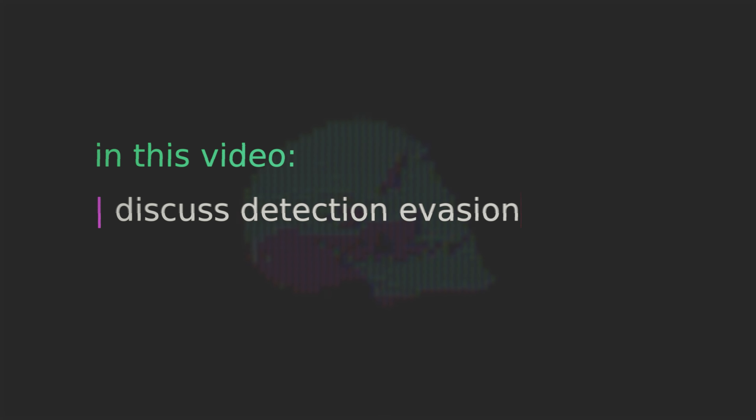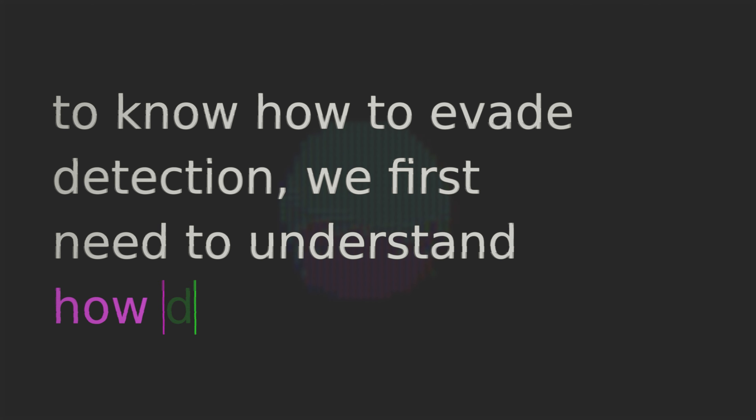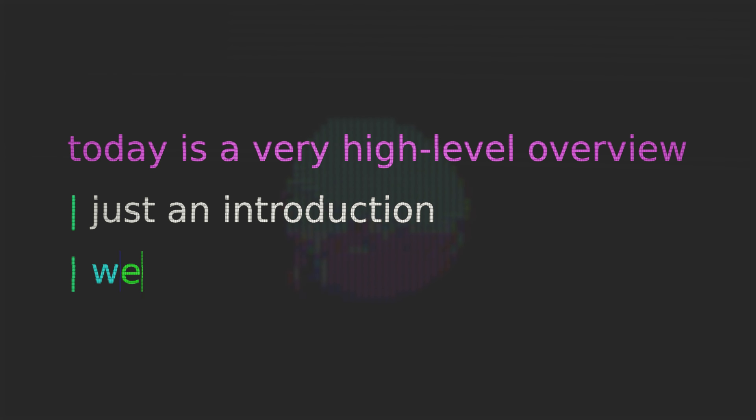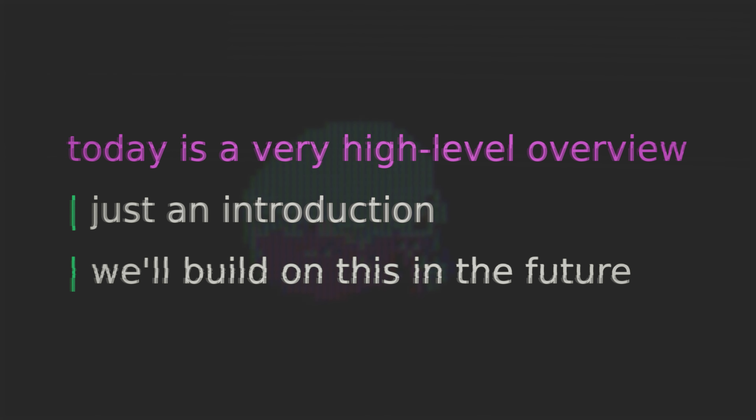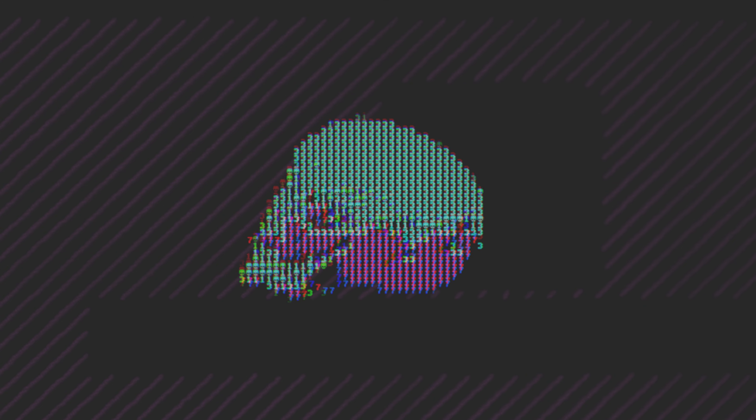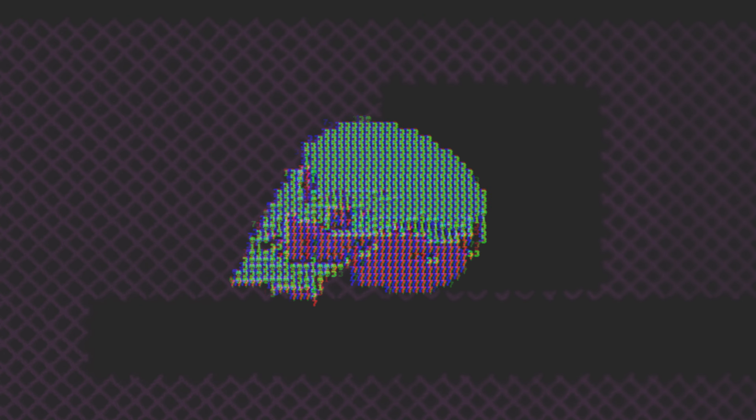In this video we'll spend a bit of time initially discussing detection evasion, but more so we'll do a very high-level exploration of modern detection. Because in order to know how to evade detection we have to first come to grips with how detection actually works. This will be a very high-level exploration — just to introduce you to the overall conceptual scaffolding. In future lectures we'll layer on top of this and continue to learn about detection evasion.